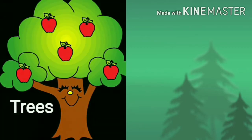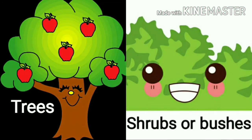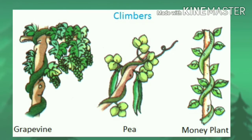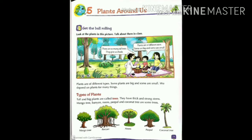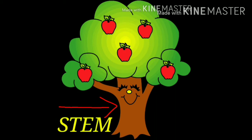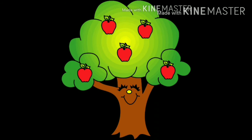Now let's talk about types of plants. In this topic, we will learn about trees, shrubs or bushes, herbs, creepers, and climbers. The first question is: what is a tree? Tall and big plants are called trees. They have strong and thick stems. Mango tree, banyan, neem, peepal, and coconut tree are some examples of trees. Any plant that has a strong and thick stem is called a tree.